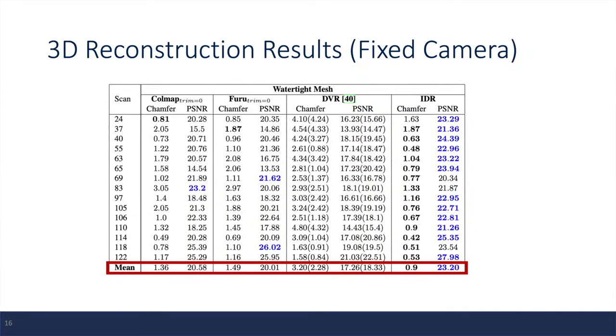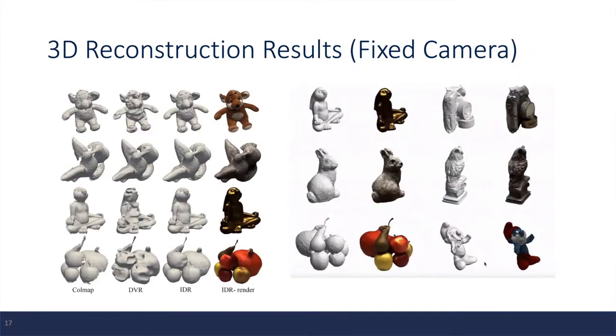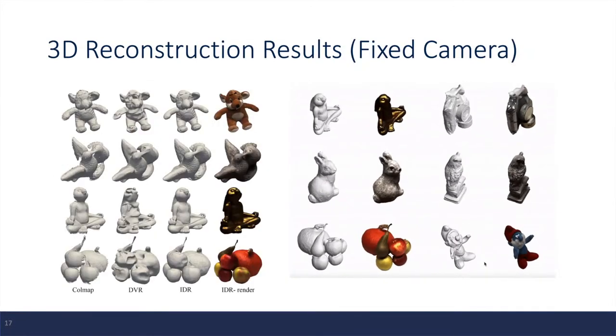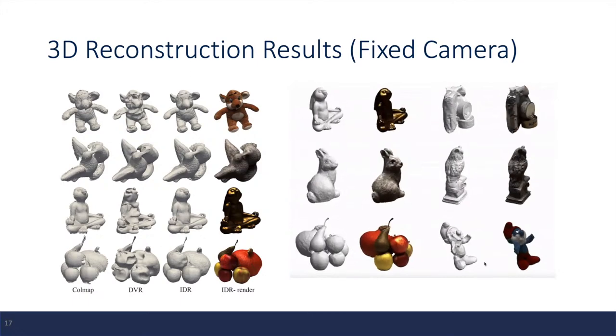And as we can see in the last row, on average, it has the lowest Chamfer distance and the highest PSNR value. So this shows that the proposed method has the best performance in both the geometry and appearance for 3D reconstruction. And here are some qualitative results for the 3D reconstruction based on fixed cameras.